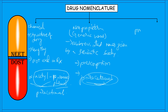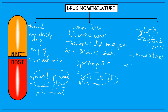The third type is the proprietary name, also called the brand name or trade name. These names are given by the manufacturers of a drug in their factories or industries, and can also be used in prescriptions by practitioners. For example, 'Crocin' is a brand name given to the paracetamol tablet manufactured by a certain company.